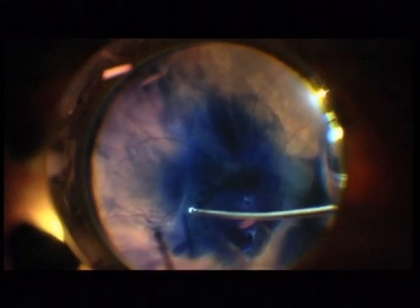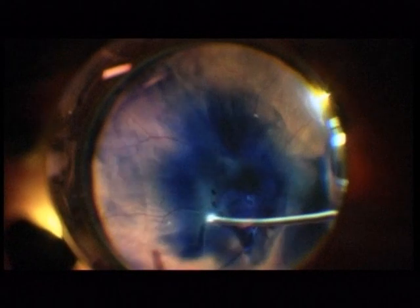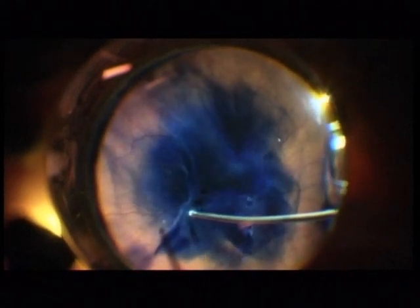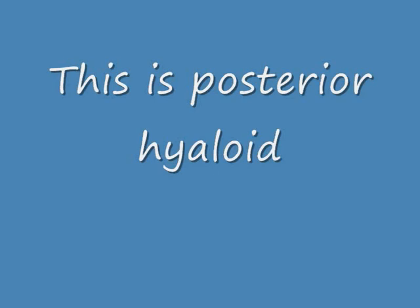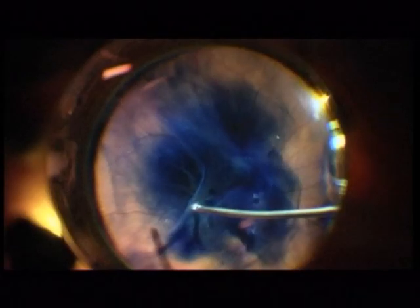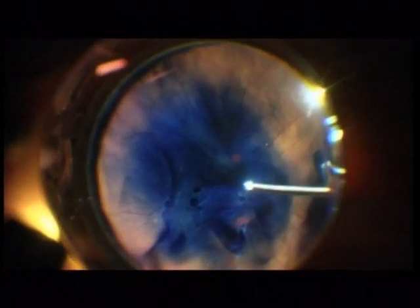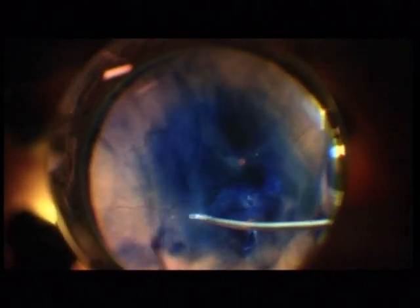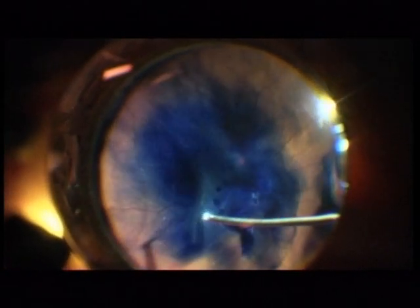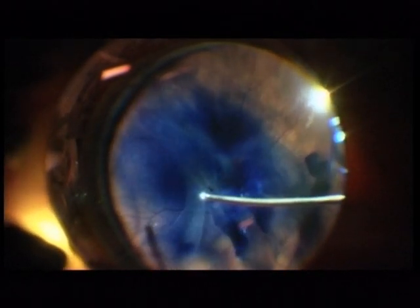Now I inject TriPenBlue to visualize the posterior hyaloid. So this is posterior hyaloid and not retina. There are two black spots — it is not a rupture; this is actually an opening in the posterior hyaloid.